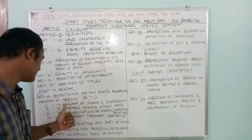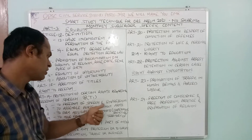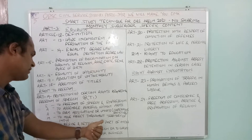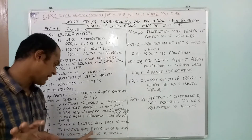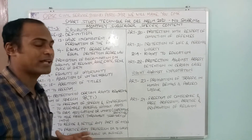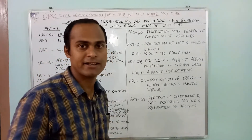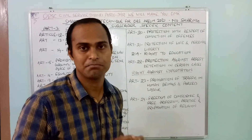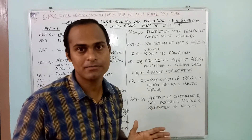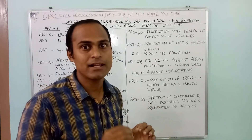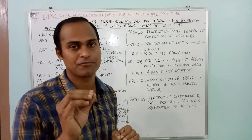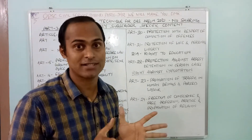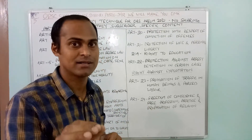EAAMRP covers: freedom of speech and expression, freedom of assembly peacefully without arms, forming associations or unions, moving freely within the territory, residing and settling in any part of India, and practicing any profession or occupation. Regarding media freedom — there is no separate mention of media freedom in the Constitution except under Article 19, freedom of speech and expression. So if asked about media freedom, the answer is Article 19.